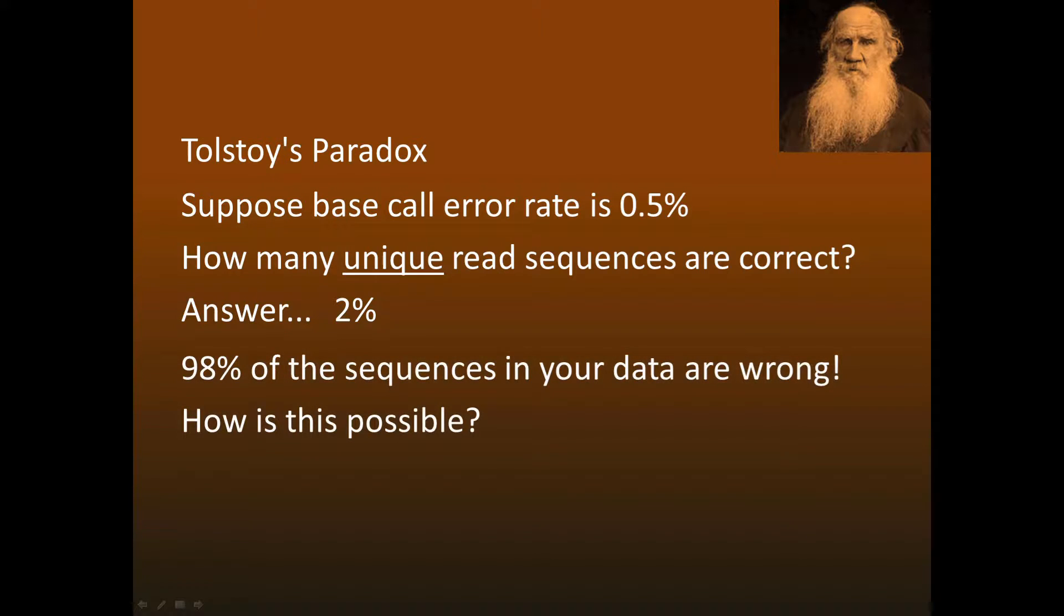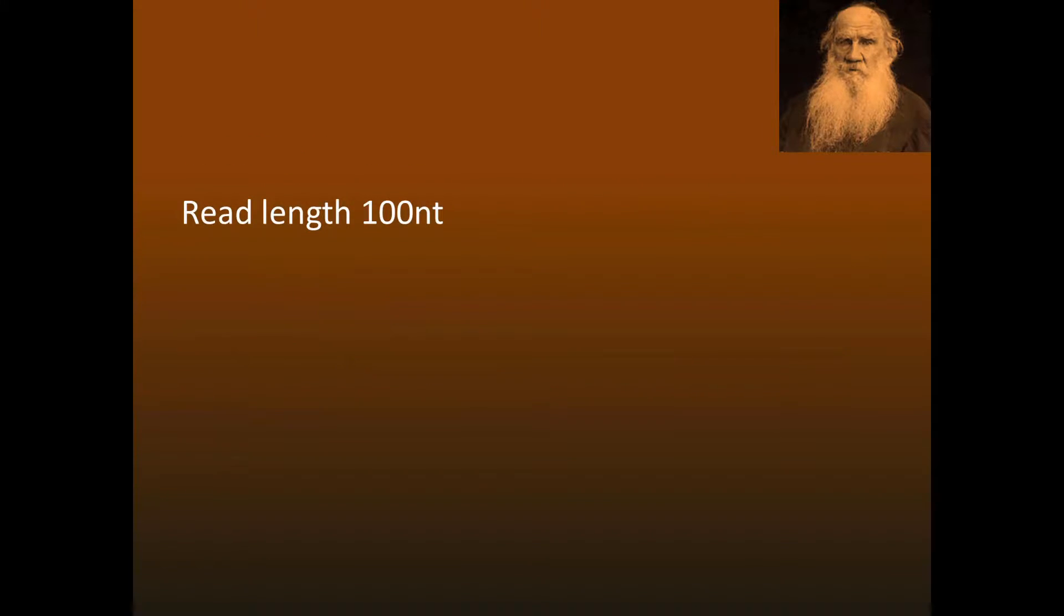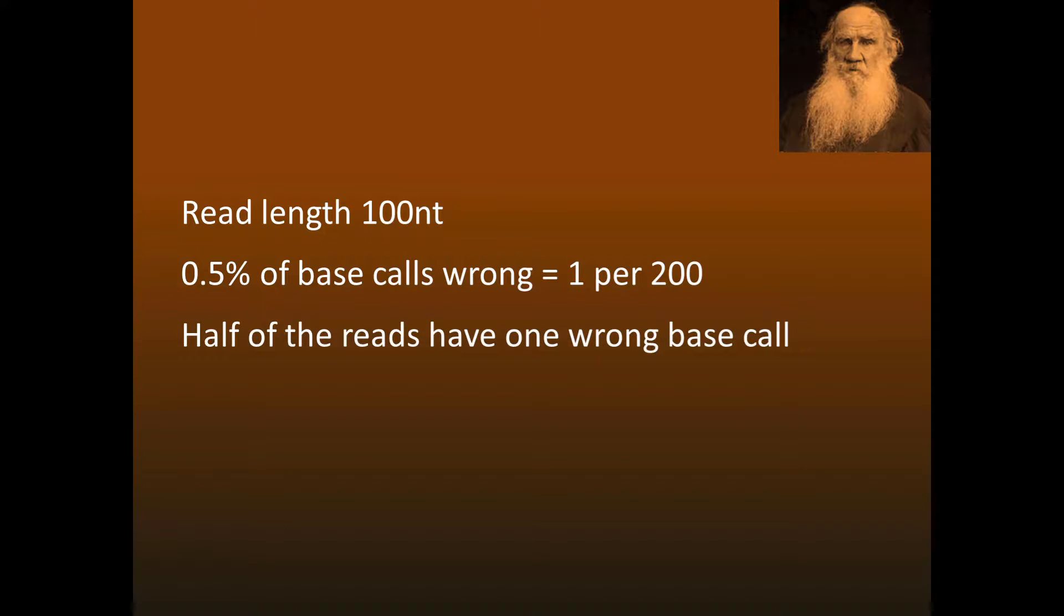In other words, something like 98% of the sequences in your reads are wrong. How is this possible? Choosing some round numbers, suppose the read length is 100 nucleotides and 0.5% of the base calls are wrong, then there's one wrong letter out of every 200, and half the reads have bad sequences. Notice that the error rate per read is 100 times greater than the error rate per base.